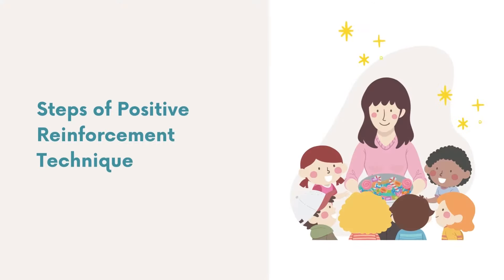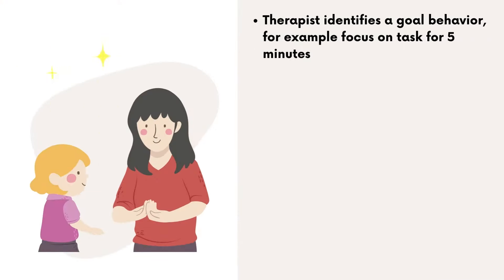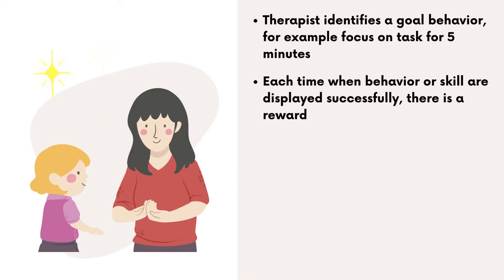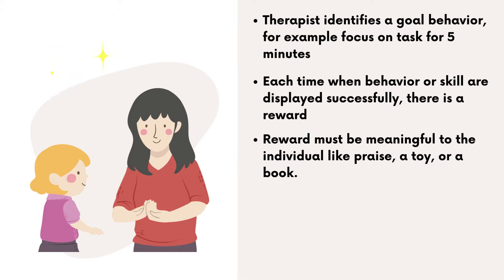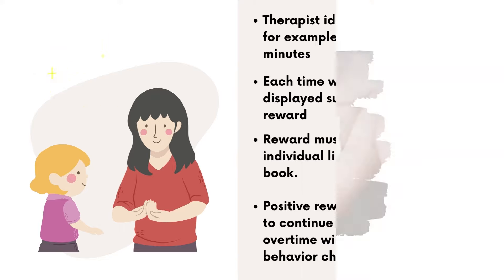Here are the steps of the positive reinforcement technique. The therapist identifies a goal behavior — for example, focusing on a task for five minutes. Each time the behavior or skill is displayed successfully, there is a reward. The reward must be meaningful to the individual, like praise, a toy, or a book. Positive rewards encourage the person to continue using the skill, and over time this will lead to meaningful behavior change.